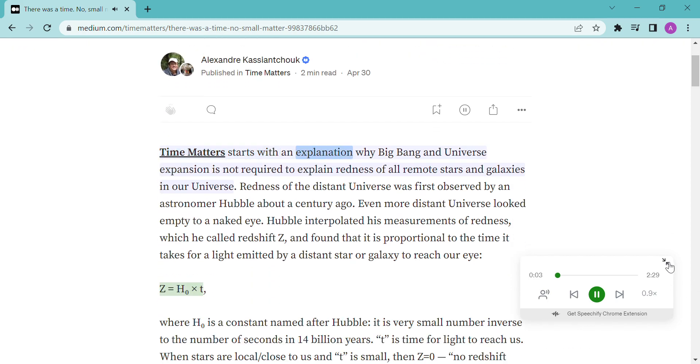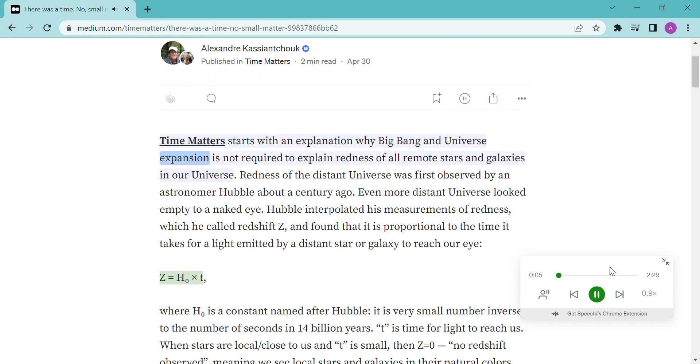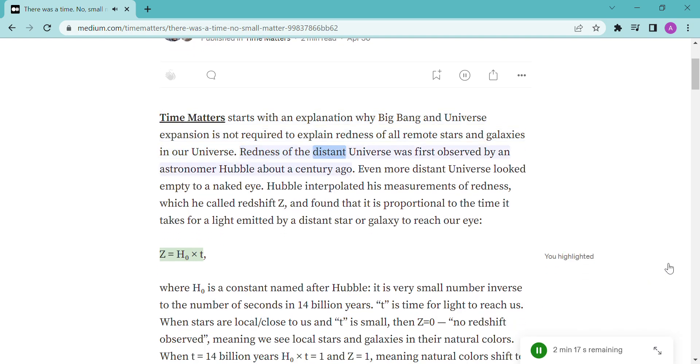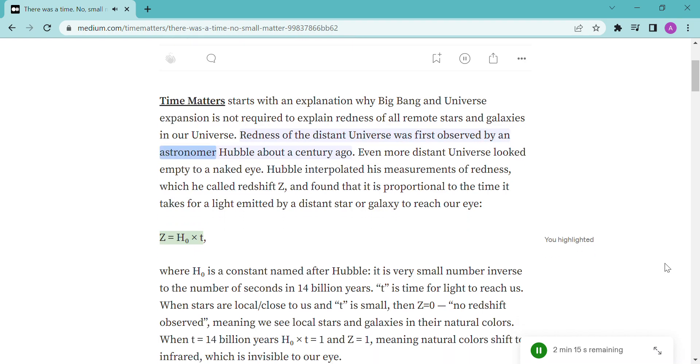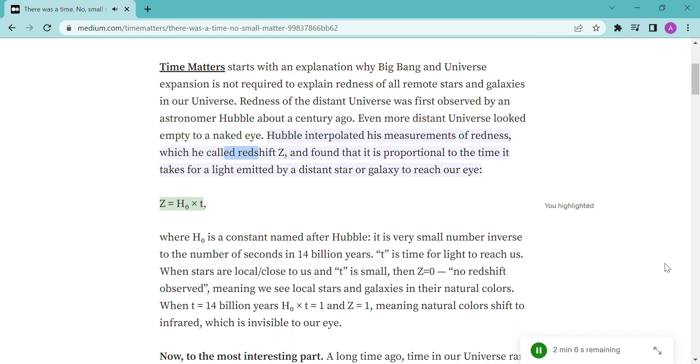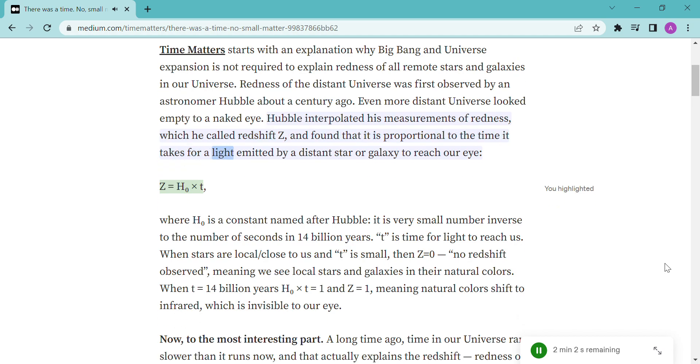Time Matters starts with an explanation why Big Bang and universe expansion is not required to explain redness of all remote stars and galaxies in our universe. Redness of the distant universe was first observed by astronomer Hubble about a century ago. Even more distant universe looked empty to the naked eye. Hubble interpolated his measurements of redness, which he called redshift Z, and found that it is proportional to the time it takes for light emitted by a distant star or galaxy to reach our eye.